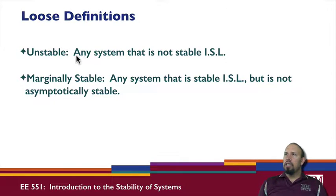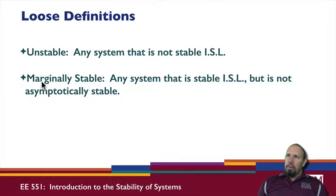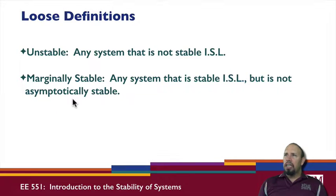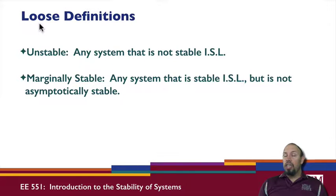We also have some loose definitions. A system is unstable if it is not stable in the sense of Lyapunov. A system is said to be marginally stable if it is stable in the sense of Lyapunov but not asymptotically stable. These are loose definitions, not rigorous mathematical ones like the others.